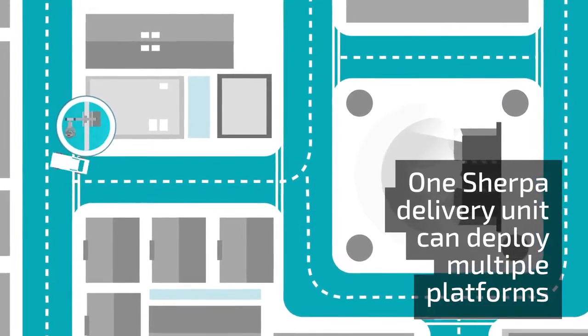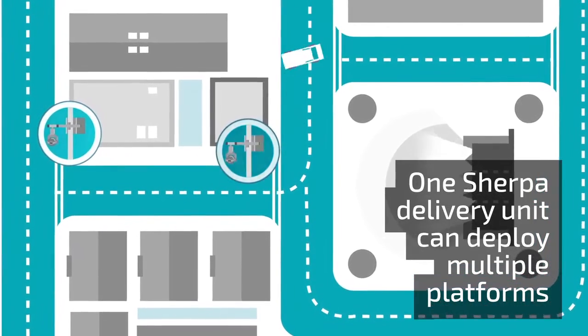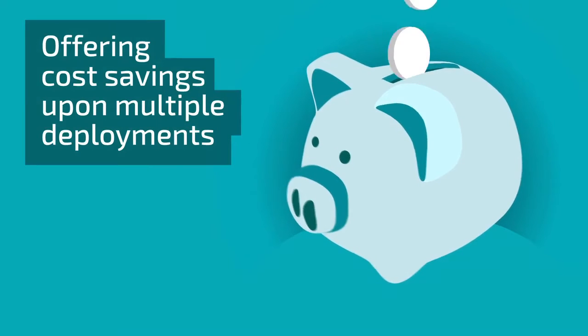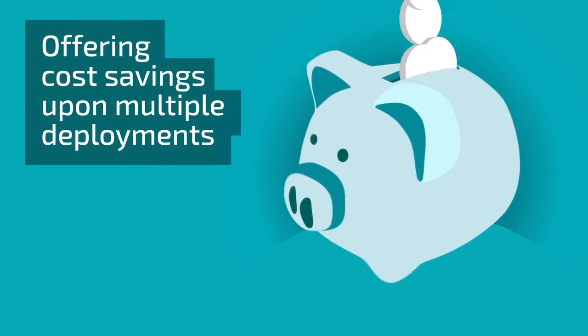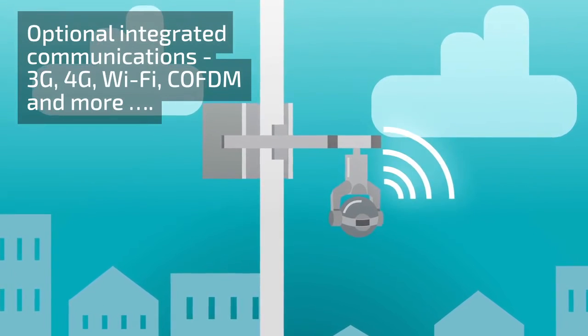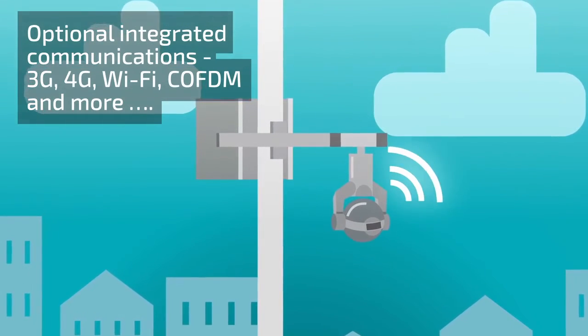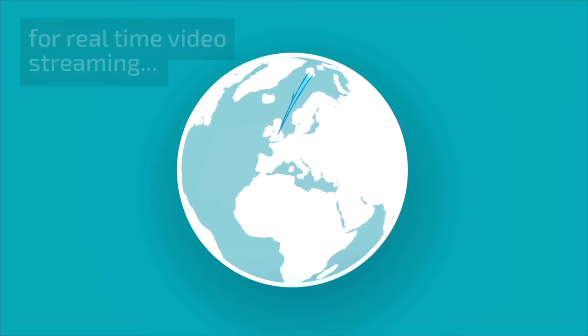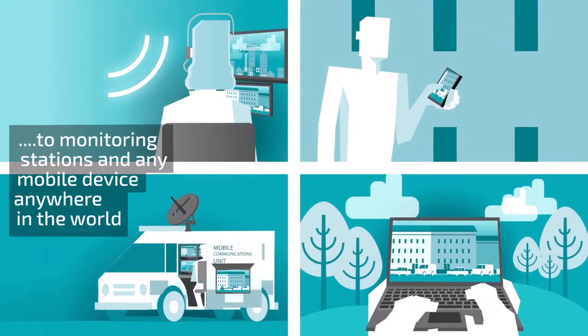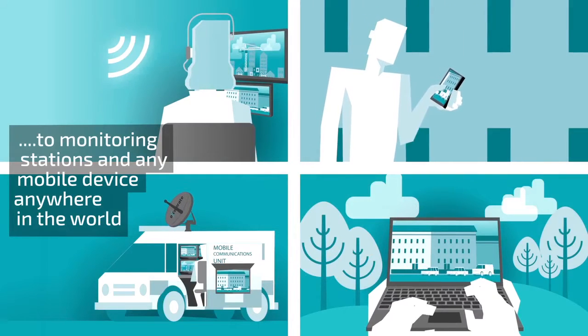Only one Sherpa delivery unit is needed to deploy as many platforms as required, offering cost savings where multiple camera deployments are needed. It also offers optional integration of Wi-Fi, COFDOM and 3G and 4G networks, as well as other wireless capabilities for real-time secure video streaming to any monitoring station anywhere in the world.